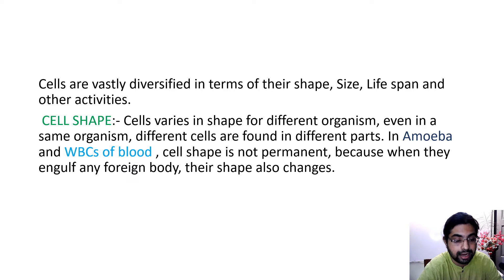Even in the same organism, different cells are found in different parts. In amoeba and WBCs of blood, cell shape is not permanent because when amoeba engulfs something from the surrounding to protect itself from any hazardous thing or foreign body, it engulfs the substance and thereafter it changes its shape. So cell shape is not even permanent, it changes.